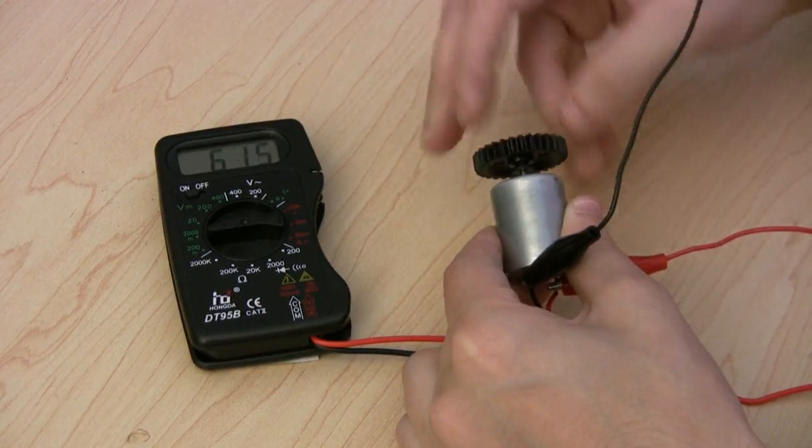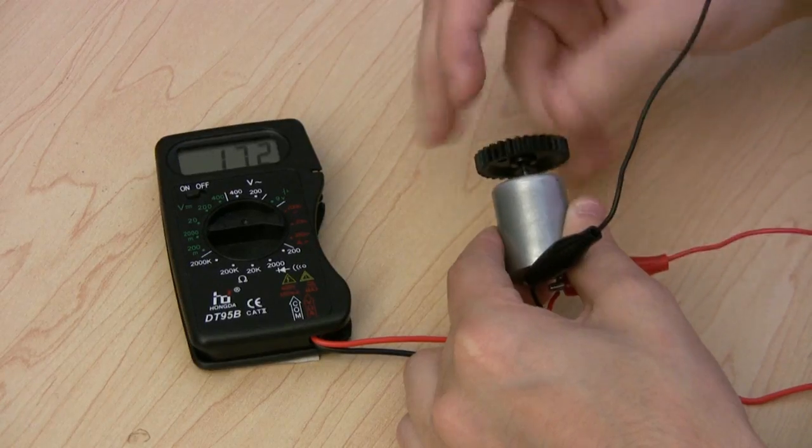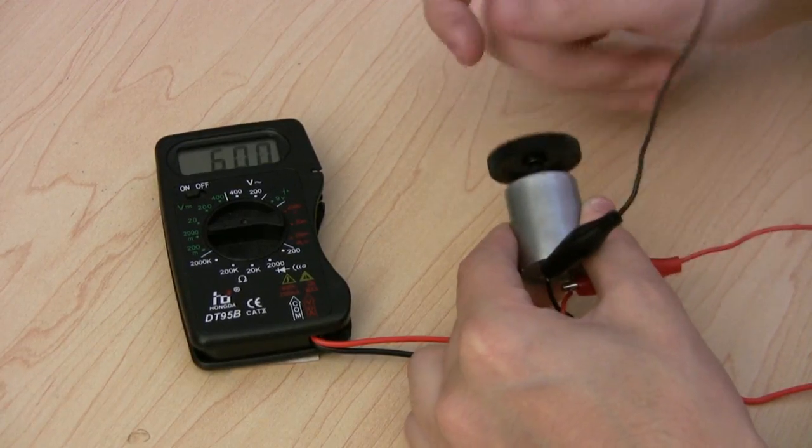If you remember back to a physics class, this voltage comes about because the permanent magnets in the motor are moving with respect to the motor coils.